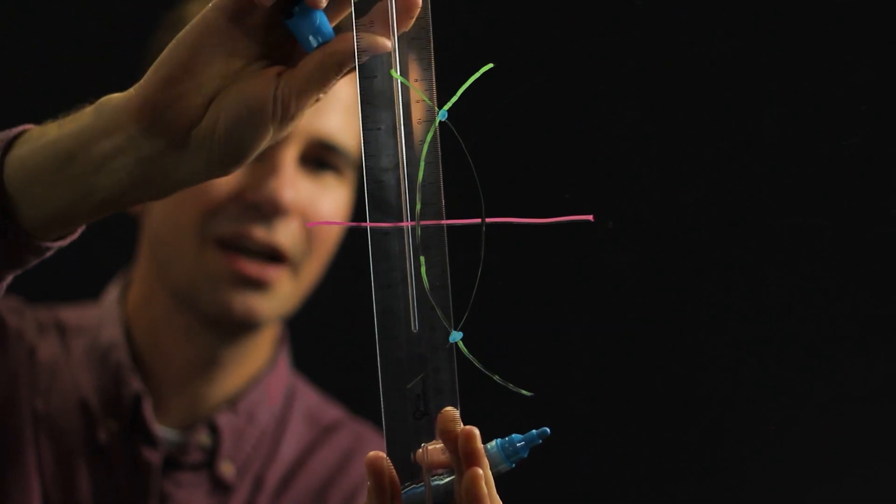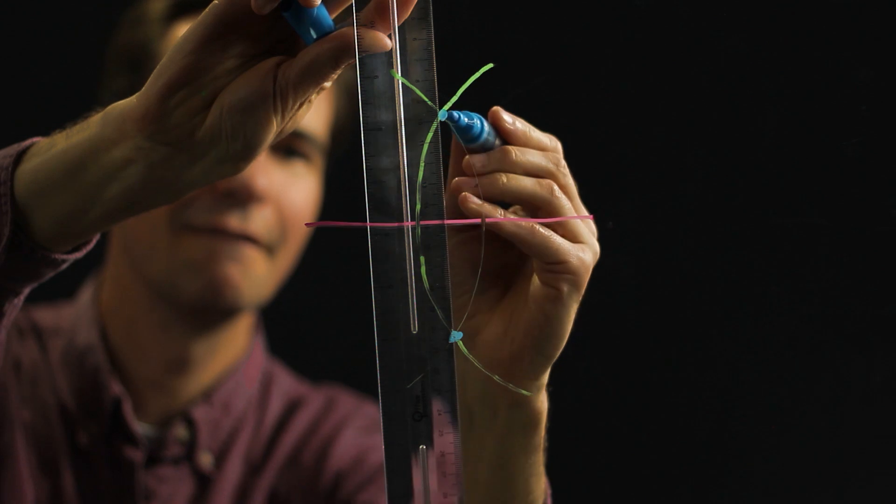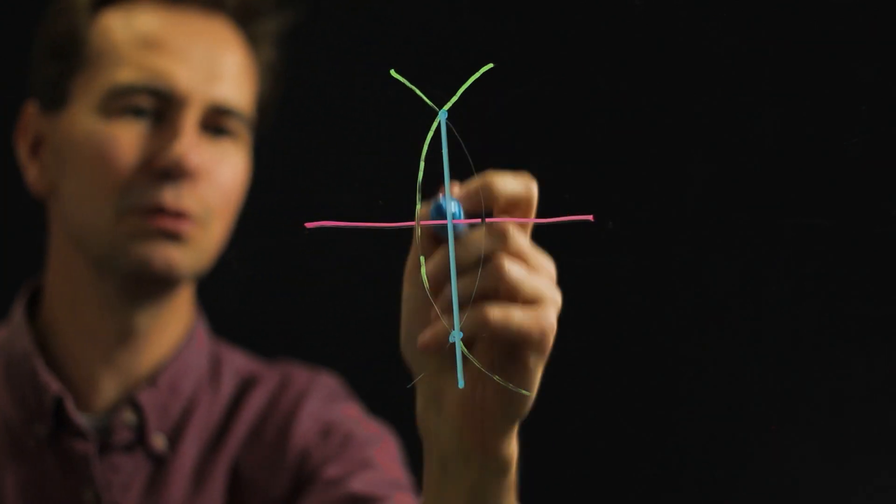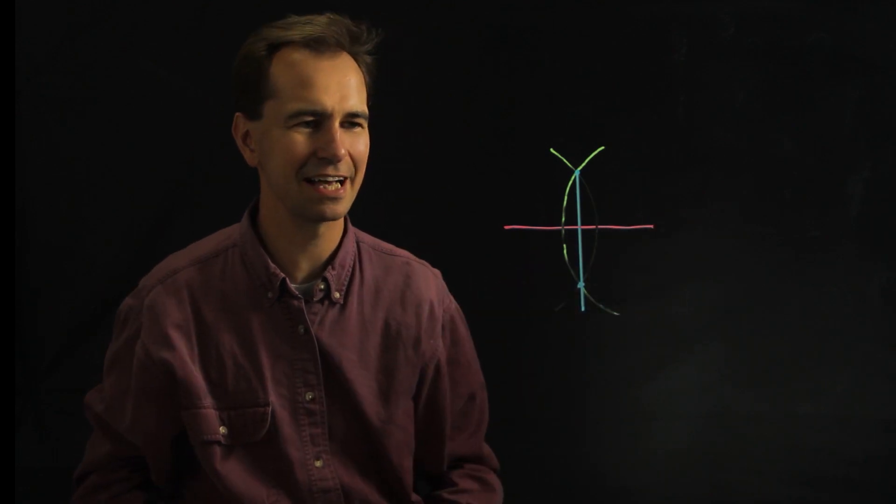if you draw a straight line right between those, like that, and that blue line cuts this pink line exactly in half.